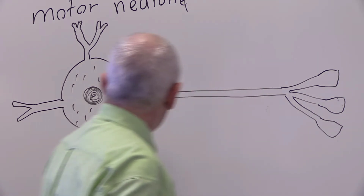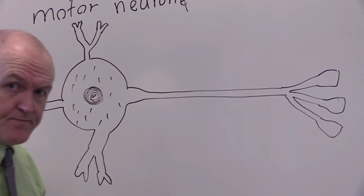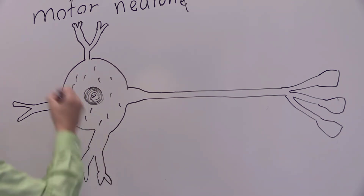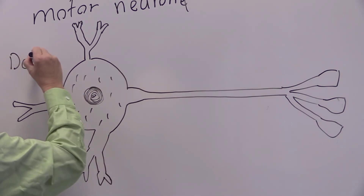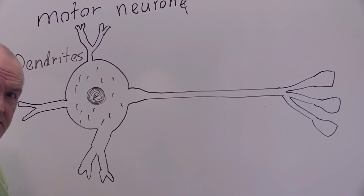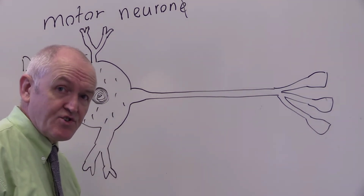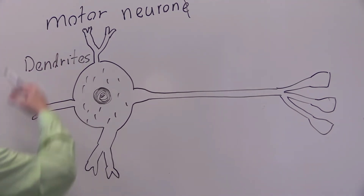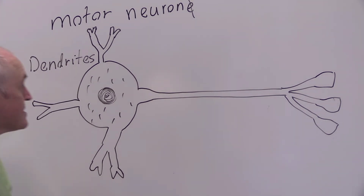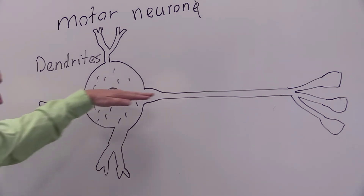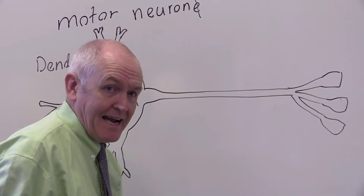So those are the components of a motor neuron. These small branches here are called dendrites — 'dendritic' means tree-like. There will be several short dendrites on a motor neuron. And this long one here — that's the axon.